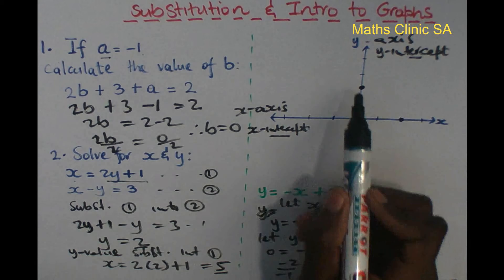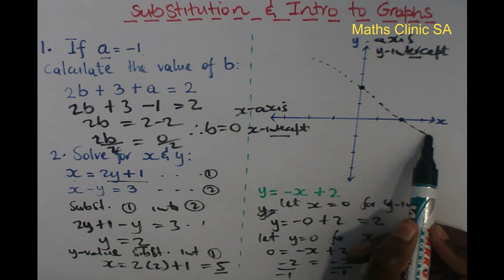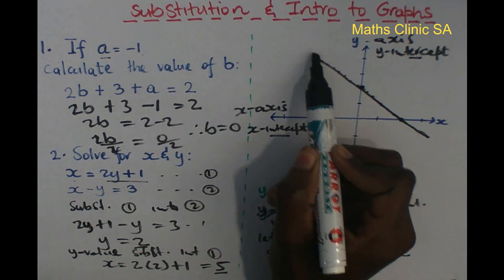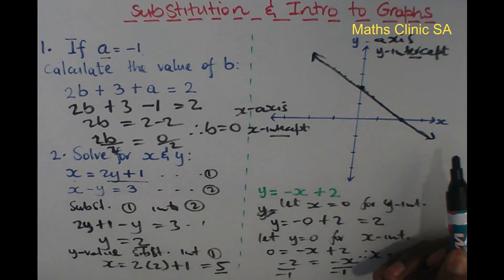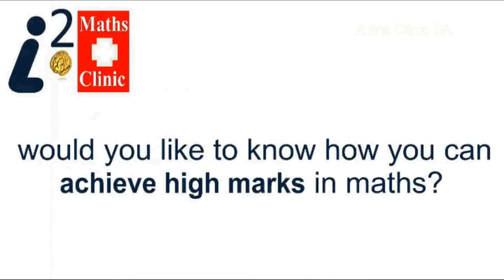So the straight line passes through these two points on the graph.